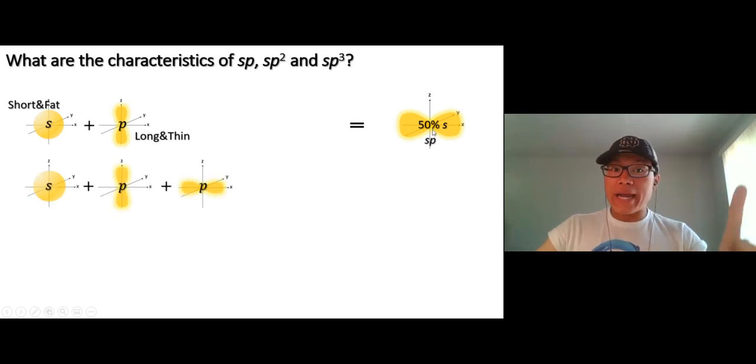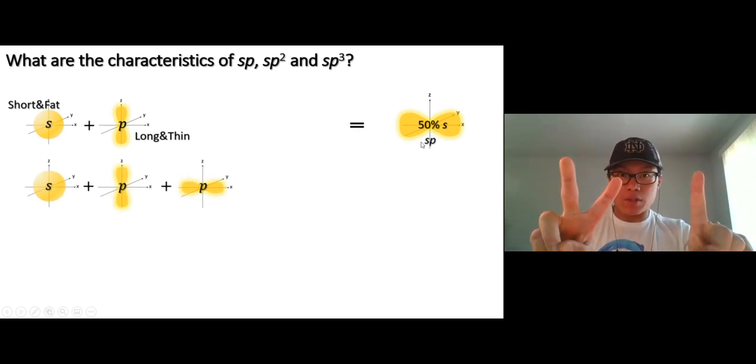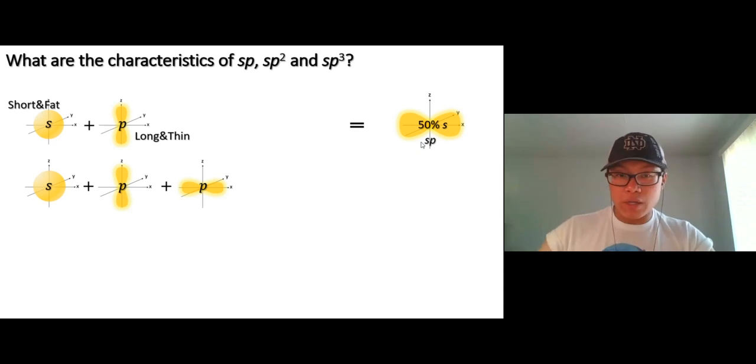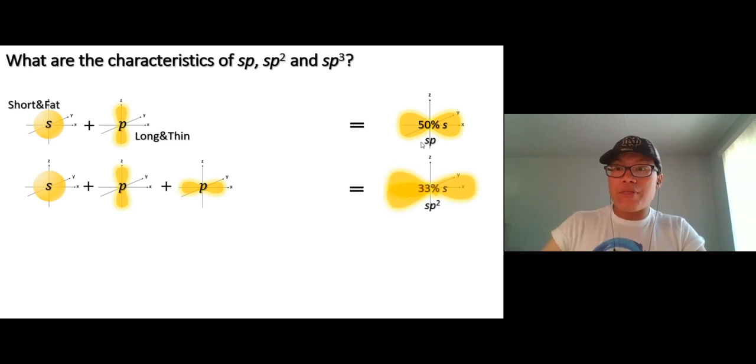Now if I mix one S orbital and two P orbitals, what's the offspring look like? Now, the offspring name is going to be SP2, of course, but what do they look like though? Do they look more like S or more like P? Yeah, of course it's going to be more like P. If you do the math, there's going to be 33% S, so 67% P, so compared to the SP orbital, an SP2 orbital is longer, look a little bit more like P, does it make sense?